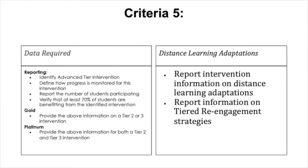To complete this item, you will need to identify one to two advanced tier interventions, define how progress is monitored for these interventions including which data are used to track progress, report the number of students that have participated in this intervention, and verify that at least 70% of participating students have responded positively to the identified intervention.